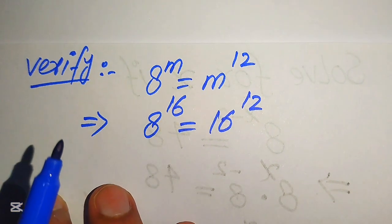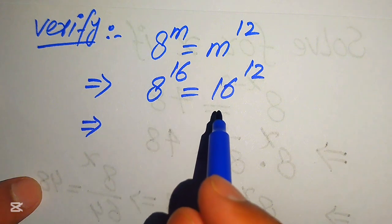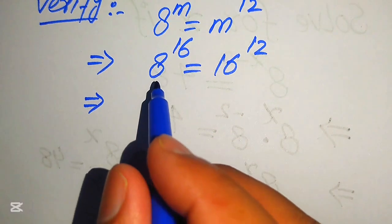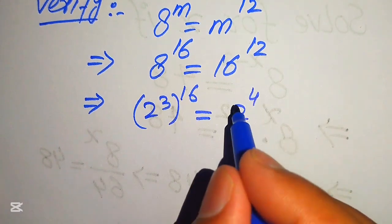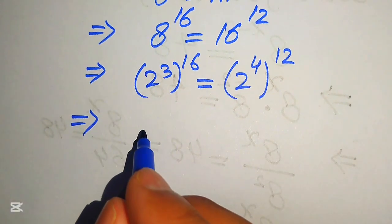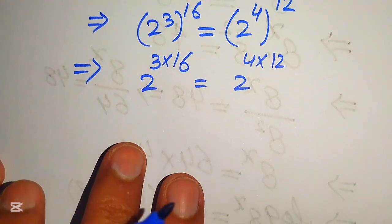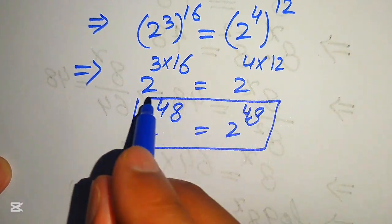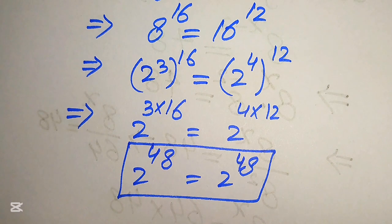To verify both sides are equal, we write each base in prime factor form. 8 equals 2 cubed, so the left side is 2 cubed to the power of 16. And 16 equals 2 to the power of 4, so the right side is 2 to the power of 4 times 12. Multiplying exponents: 3 times 16 equals 48, and 4 times 12 also equals 48. Both sides equal 2 to the power of 48, confirming m equals 16 is correct. Thank you for watching — please subscribe for more videos.